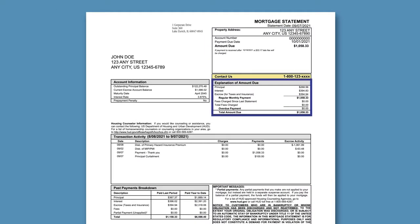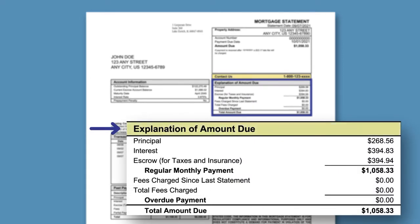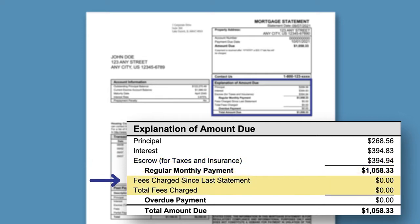Below the Contact Us customer service phone number is an area titled Explanation of Amount Due, which includes the breakdown of principal, interest, and escrow for both taxes and insurance, if applicable. In addition, if any fees were charged, they would also appear in this area.